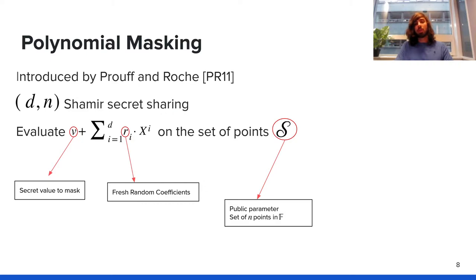In 2011, Prouff and Roche introduced another type of masking called polynomial masking. Polynomial masking boils down to Shamir secret sharing scheme with parameters d and n. D is still the security order, but n is the number of shares, which is not necessarily D plus 1. You generate D random variables, which are used as the random coefficients of a random polynomial whose value at 0 is your secret V. You then evaluate this polynomial on as many public points as you want in a set of points called S. To reconstruct the secret from your shares, you can use Lagrange interpolation formula.